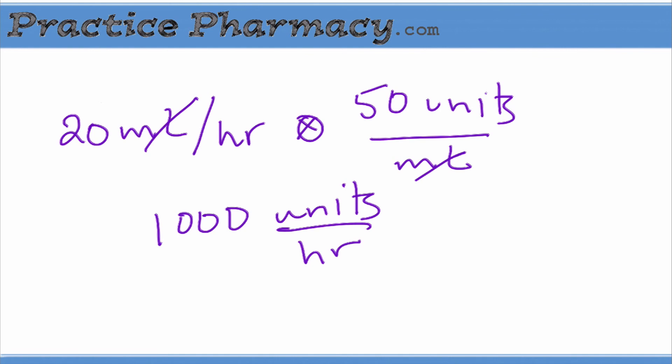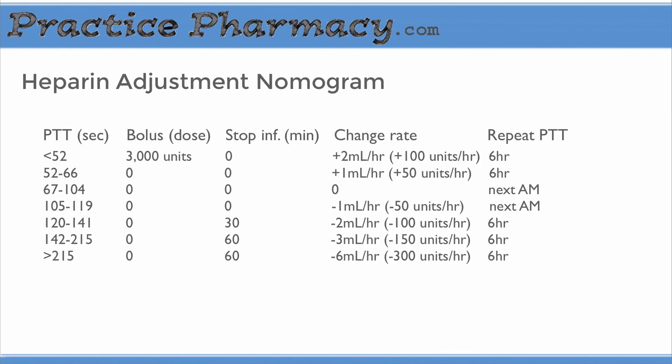So this drip will be hung at this rate, 20 milliliters per hour, for six hours. Then depending on the PTT obtained at that point, which is a blood level, the rate will be adjusted according to the nomogram on the protocol. The nomogram is a chart that tells the nurse whether to increase or decrease the rate according to how well anticoagulated the patient's blood is.